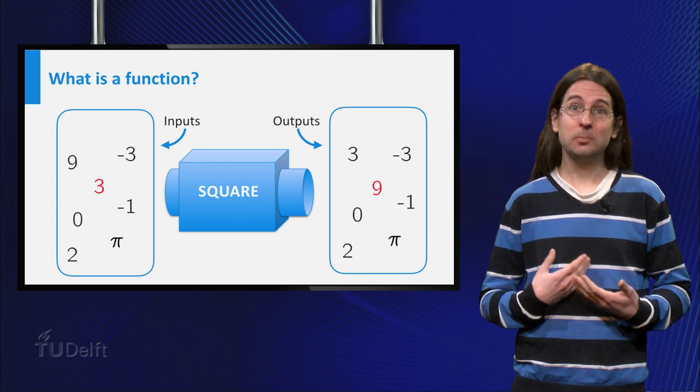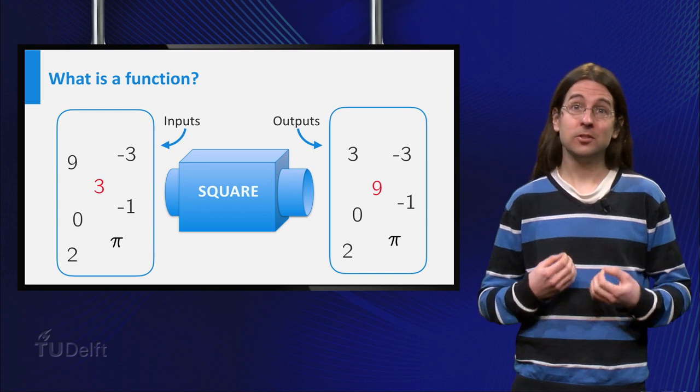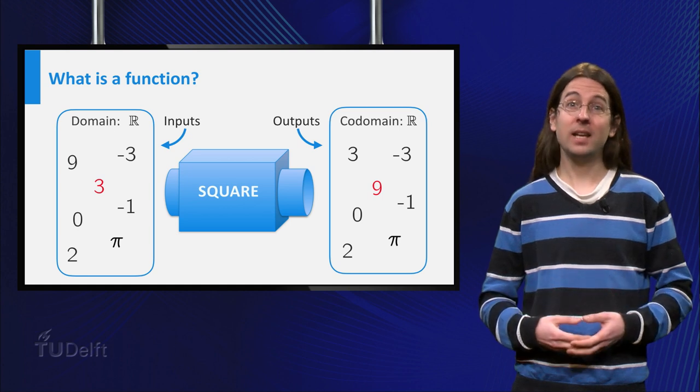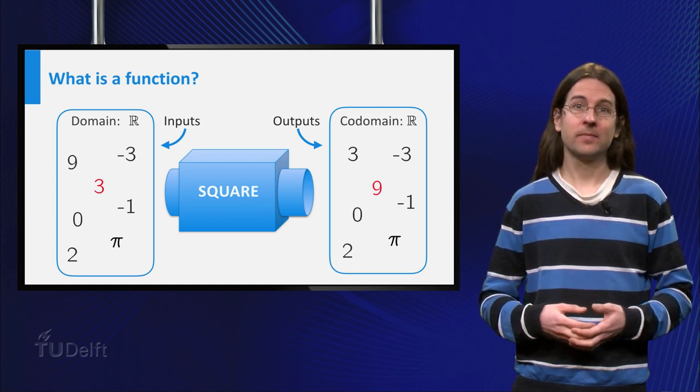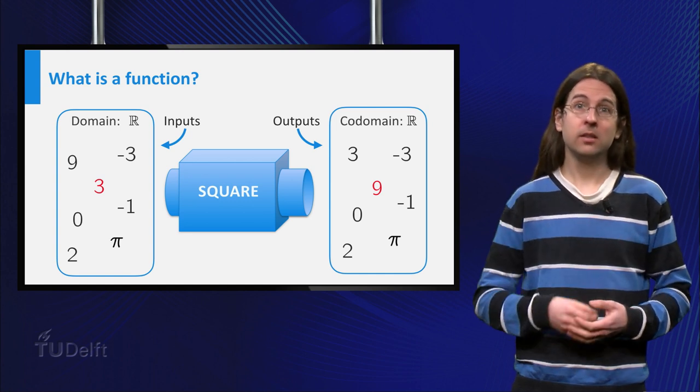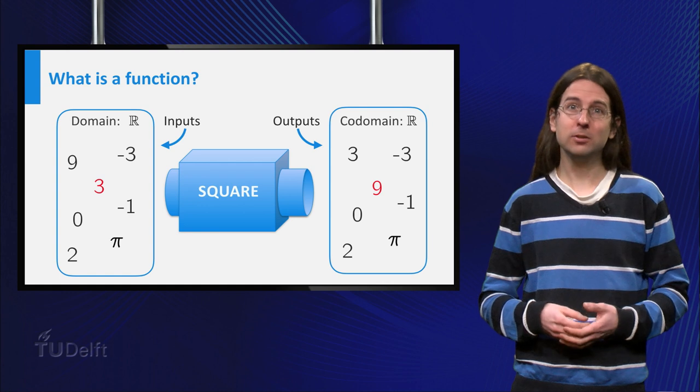Recall that a set of possible inputs is called the domain of the function, whereas the outputs should be elements of the codomain. In the example square, both domain and codomain are equal to the set of real numbers.